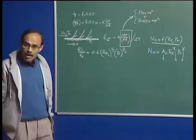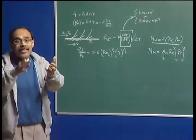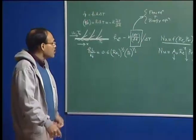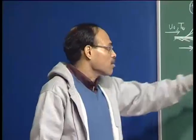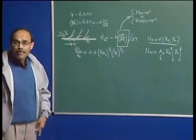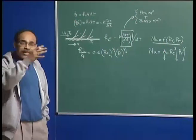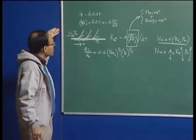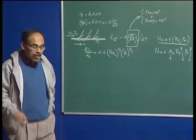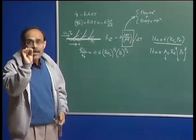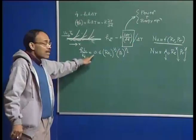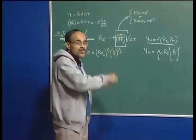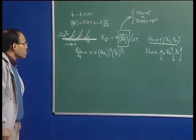Molten steel has a largely different Prandtl number compared to common fluids like air and water. Since Prandtl number is a ratio of momentum diffusivity to thermal diffusivity, the characteristics of the boundary layer in molten steel systems differ from those in air or water systems. There is therefore some element of uncertainty when applying such correlations in a straightforward fashion to steelmaking systems.